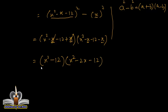اب check کرنا ہے کہ مزید factorization ہو سکتی ہے یا نہیں۔ x²-2x-12 میں: -12 کو factors میں لکھیں اور sum -2 بنانے کی کوشش کریں — 1×12، 2×6، 3×4 — کوئی بھی combination -2 نہیں دیتا۔ لہٰذا مزید factorization نہیں ہو سکتی۔ This is your final answer۔